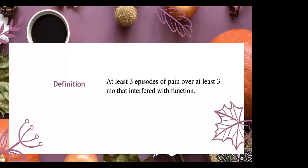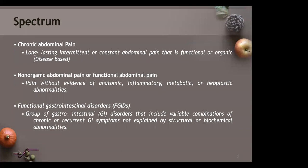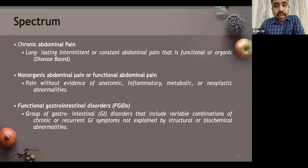Recurrent abdominal pain is defined as at least 3 episodes of pain over at least 3 months that interfered with function — this was an earlier definition. Now we have newer terminologies for long-lasting intermittent pain in children. Even though recurrent abdominal pain is most often considered functional or non-organic, in 5 to 10% of cases an organic cause can be found. The broader term 'chronic abdominal pain' covers both functional and organic causes.